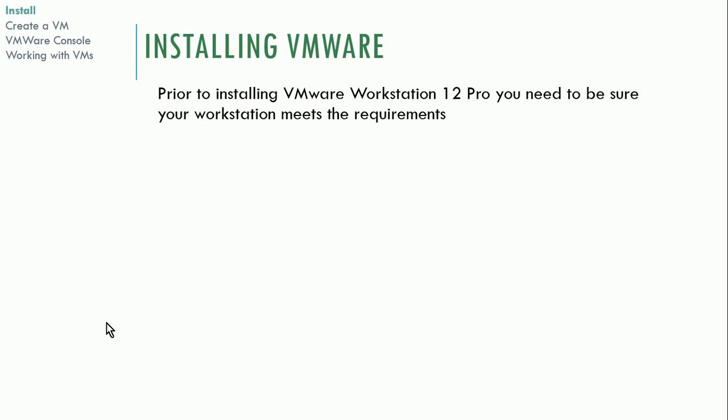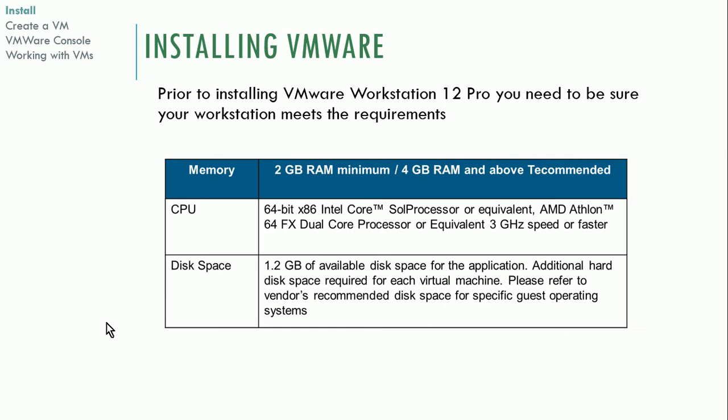For installing VMware Workstation, this presentation is geared towards version 12. There may be a newer version out by the time you're watching this, but it won't be that much different. You do have to make sure you meet the minimum specifications. Most students' computers would meet these basic specs, but it's good to check. Minimum disk space is 1.2 gigabytes of usable disk space, which really isn't that much by today's standards.